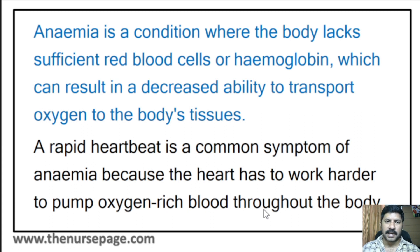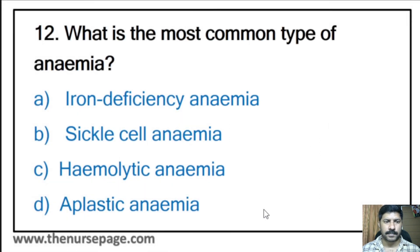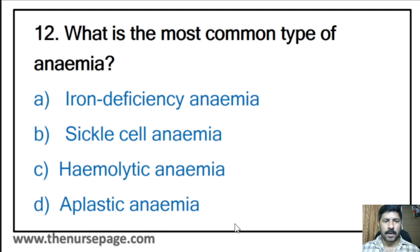Because oxygen-carrying red blood cells or hemoglobin are low, more blood has to be pumped to tissues, which is why the heartbeat rate increases. Twelfth question: What is the most common type of anemia? Iron deficiency anemia, sickle cell anemia, hemolytic anemia, or aplastic anemia? The correct answer is iron deficiency anemia.